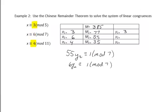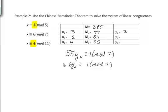To find y2, we solve 55y2 congruent to 1 mod 7. Reducing 55 mod 7: 7 goes into 49 with remainder 6, so we get 6y2 congruent to 1 mod 7. Since 6 is 7 minus 1, it's its own inverse. Multiplying both sides by 6 and reducing gives y2 congruent to 6 mod 7. We fill that into the table.